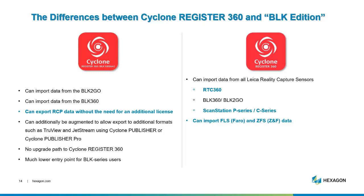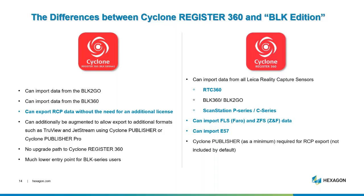We can also import FARO data and ZFS data, with some slight limitation with FARO around panoramic imagery. But we can get the data in and work with it very quickly. We can also import E57 files — registered or unregistered — which is fantastic if the data is coming from another open data source.